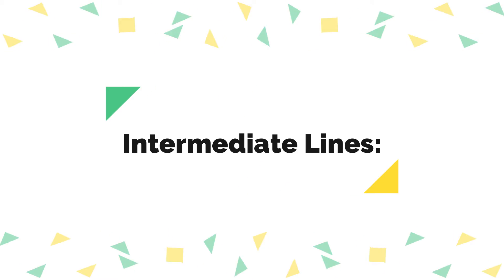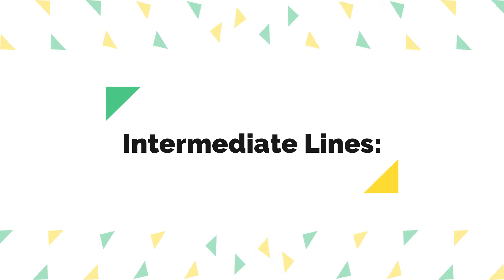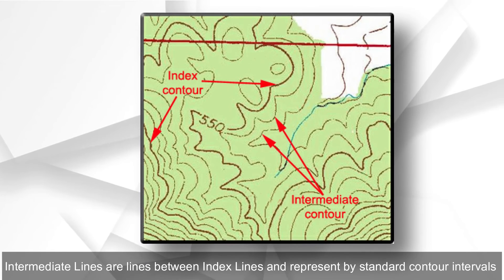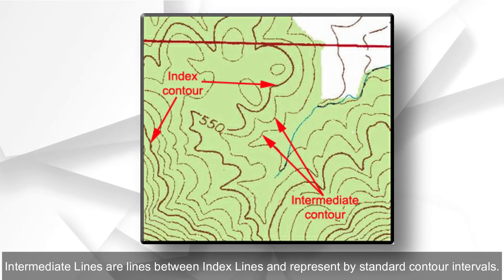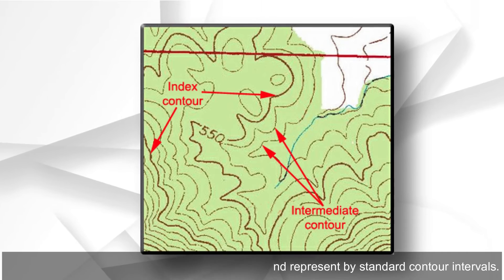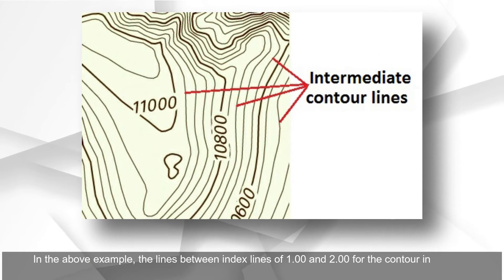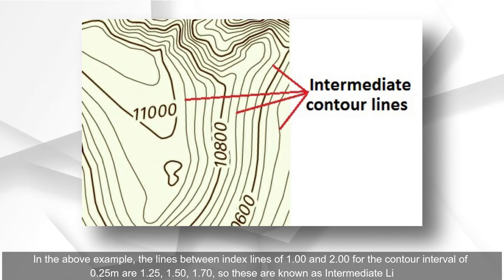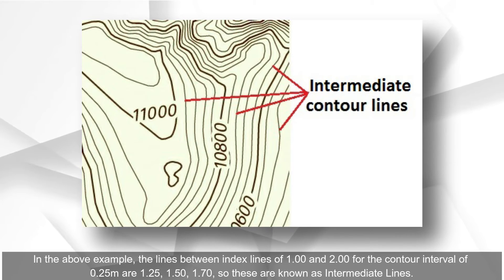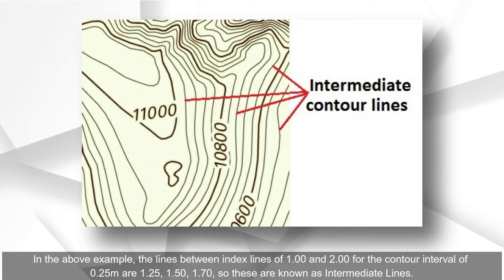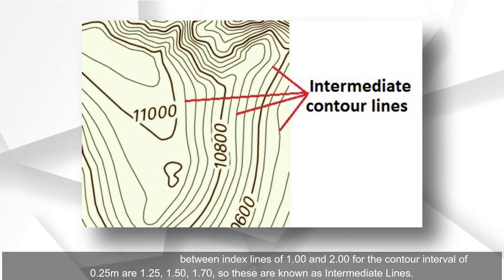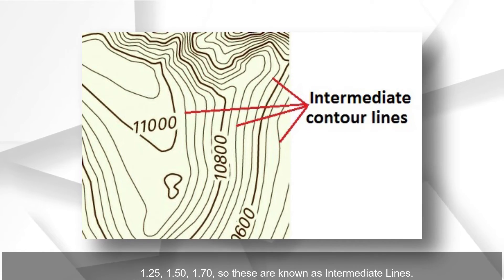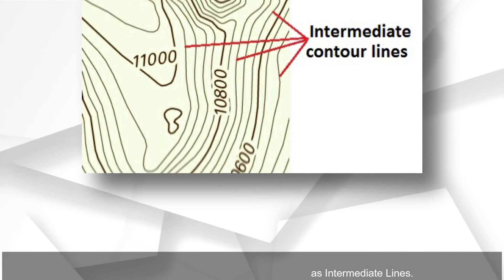Intermediate lines are the lines between index lines and are represented by standard contour intervals. In the above example, the lines between index lines of 1.00 and 2.00, for a contour interval of 0.25 meters, are 1.25, 1.50, and 1.75, and these are known as intermediate lines.